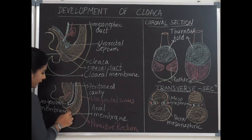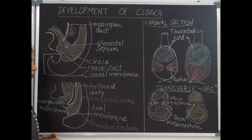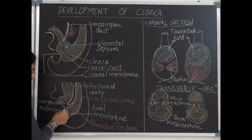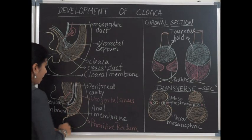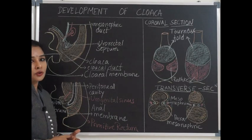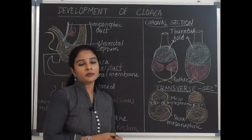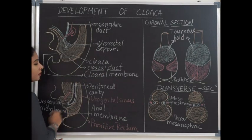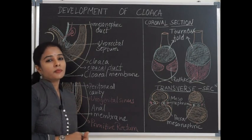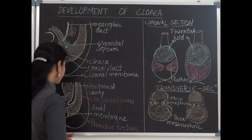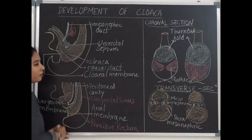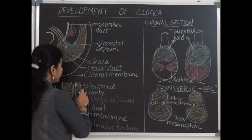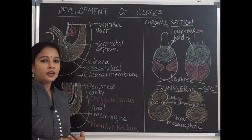The anal membrane gets deepened to form the anal pit, which is surrounded by the proctodeum. This anal pit further grows as the surrounding mesenchymal cells proliferate, making it a deeper pit forming the lower part of the anal canal. Later, this anal membrane ruptures to form the anal canal where the primitive rectum communicates with the anal canal.